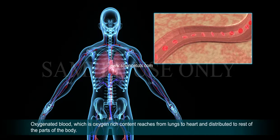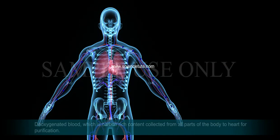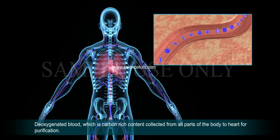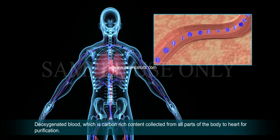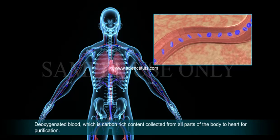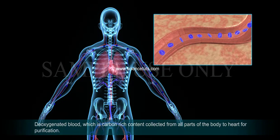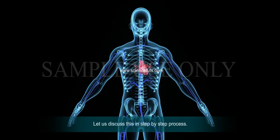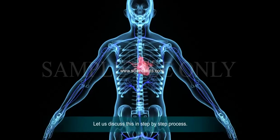Deoxygenated blood, which is carbon dioxide-rich, is collected from all parts of the body and sent to the heart. From the heart, this blood is sent to the lungs for purification or oxygenation.